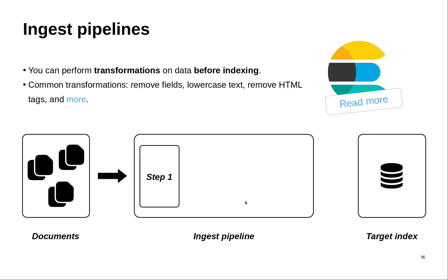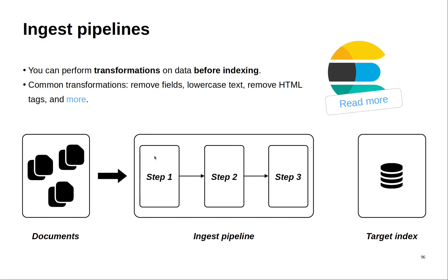Pipelines can include multiple transformation steps. Here I am showing that the data will be transformed three times — you can lowercase the text, add a field, and finally set a value. After passing all the transformations successfully, the documents will be indexed with no problems. But what happens if one of the steps fails? We will see this later.